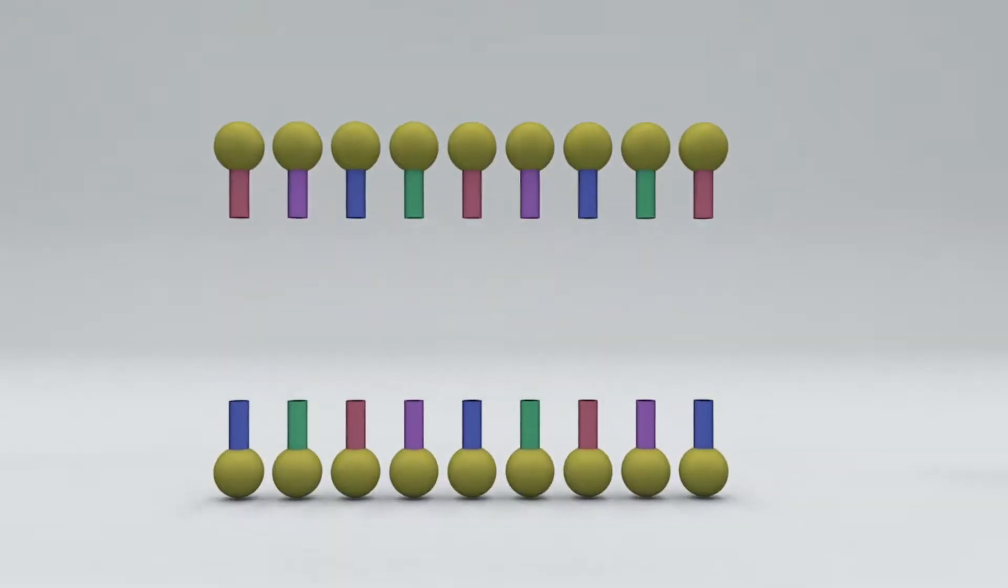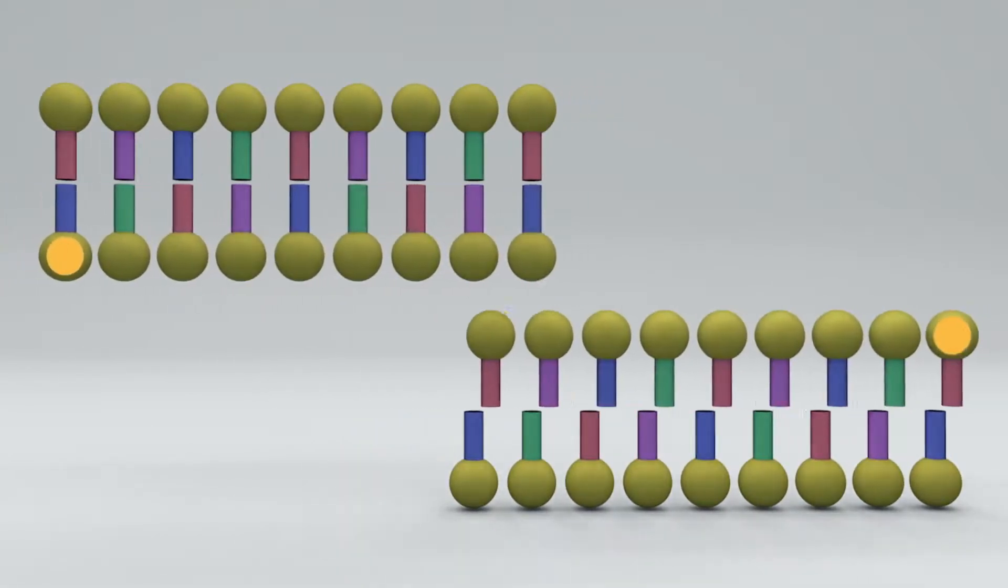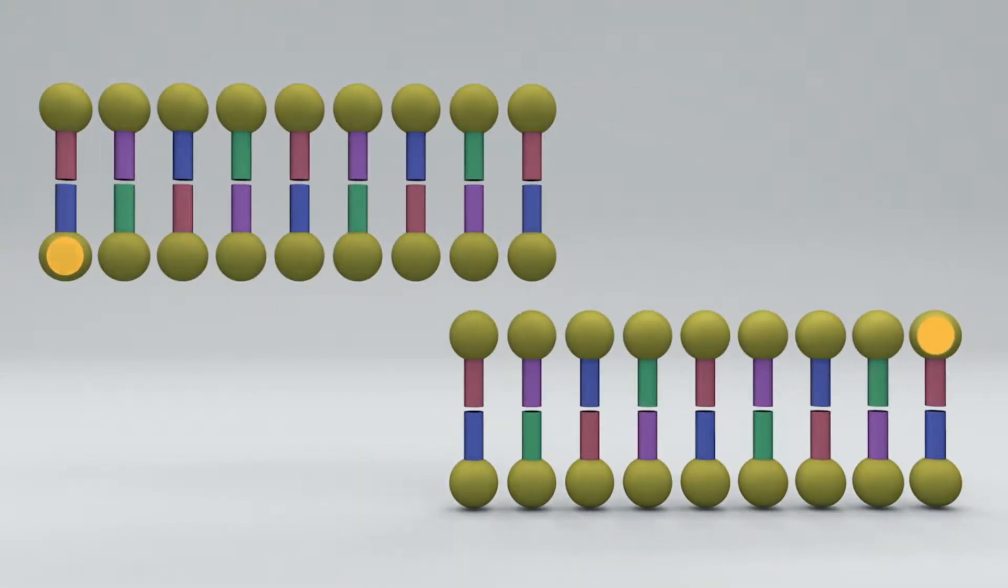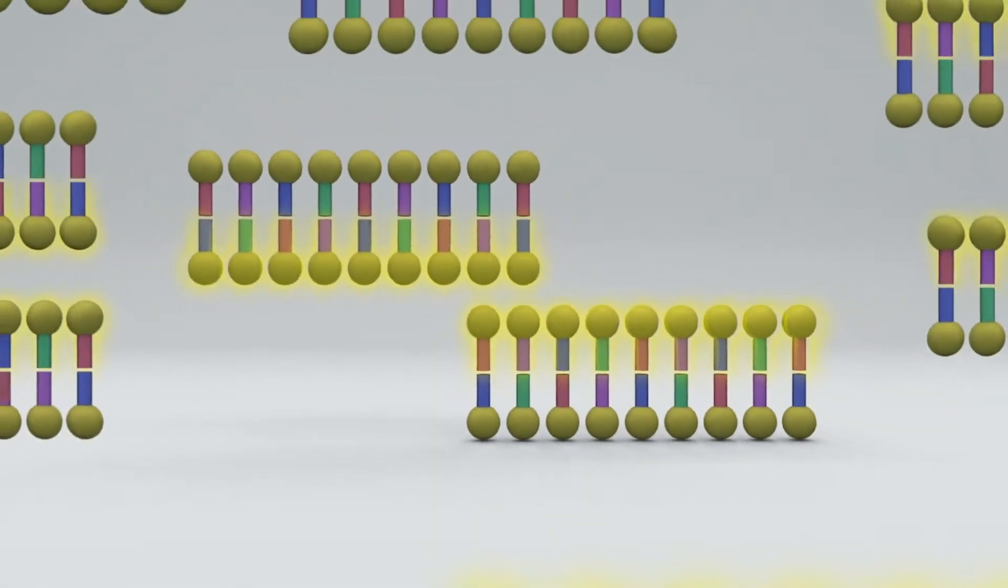Each time a new copy of the target DNA is created, a probe molecule binds to it, producing fluorescent light. The IDNow monitors the fluorescence during the test. If the fluorescence reaches a specific level, the sample is positive for that pathogen.